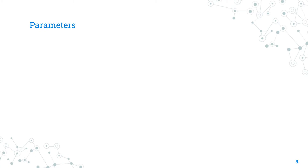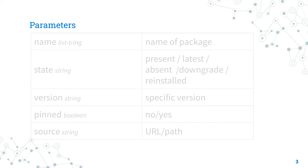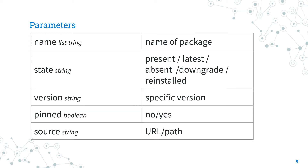The parameter list is pretty wide, but let me focus on the most important options. In the name parameter you specify the name of a package or a list of packages. If you want to target all packages in the system you can use the special keyword all.